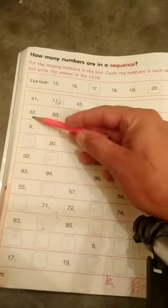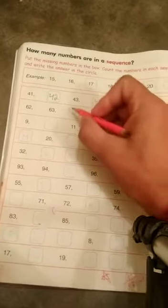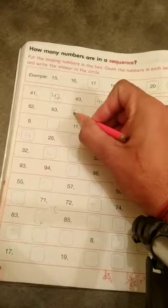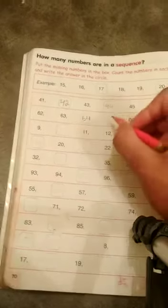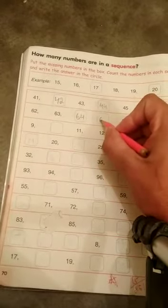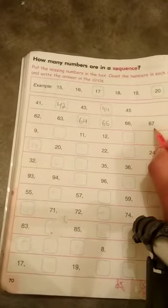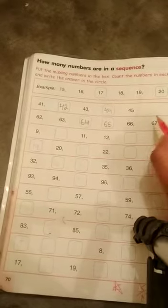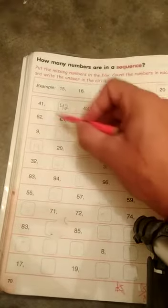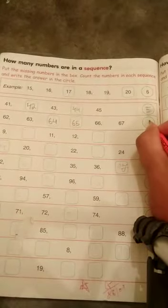Next is 62, 63, and then 63 ke baad, 64, then 65, and then 66, then 67. Now we have to count again, total kitne numbers: 1, 2, 3, 4, 5, and 6. And write in this circle, 6. Okay.